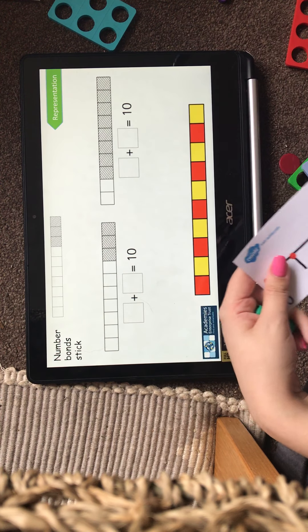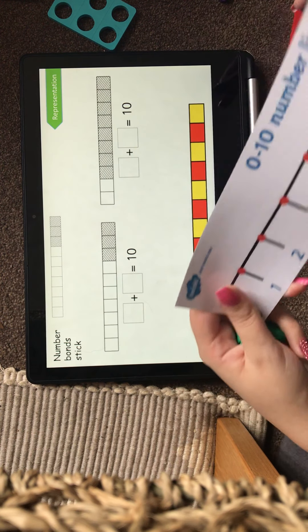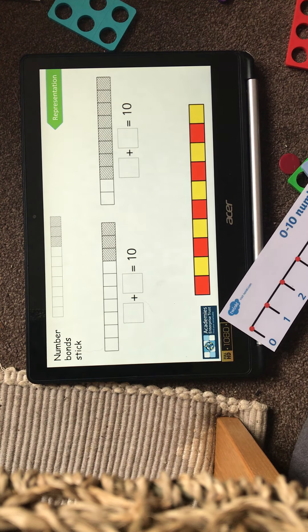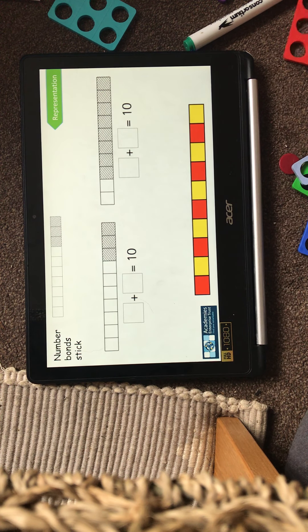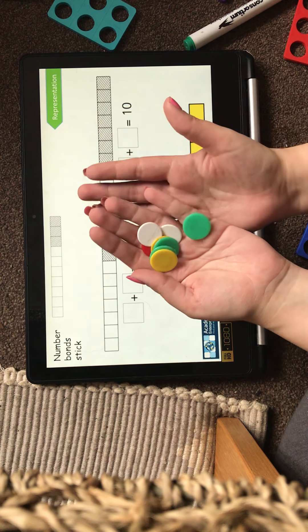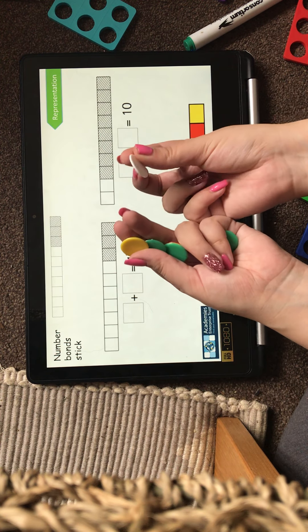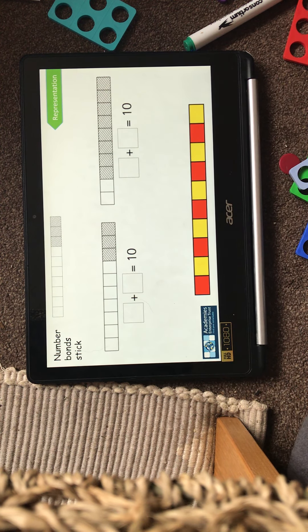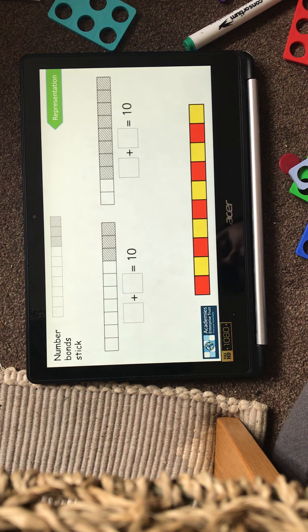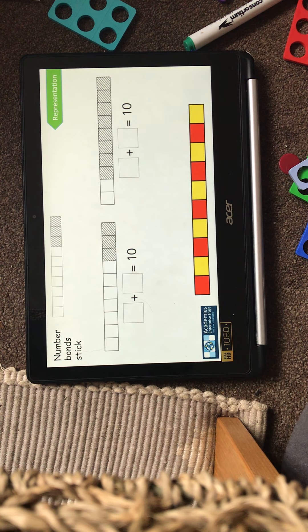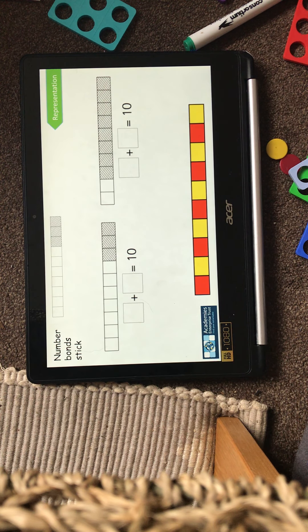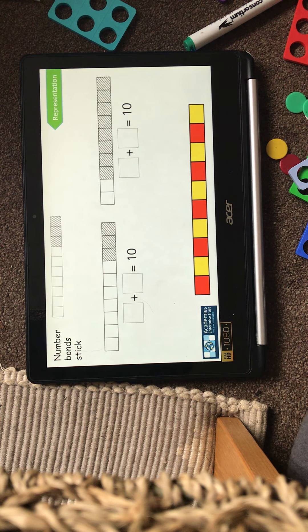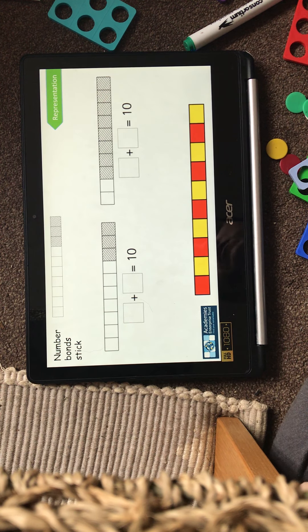So whether you use the Numicon, the tens frame, your number line, your number sticks, your counting sticks, your counters, as you could count them out using an actual object. So I could count out using my counters. Whatever method you do, you should get the right answer. So what you can do is you can use another method to check your answer if you want to. But it's important that you know all the methods that you can do.